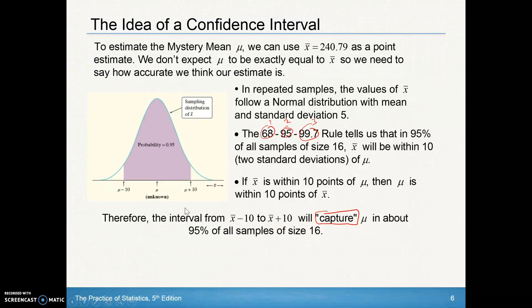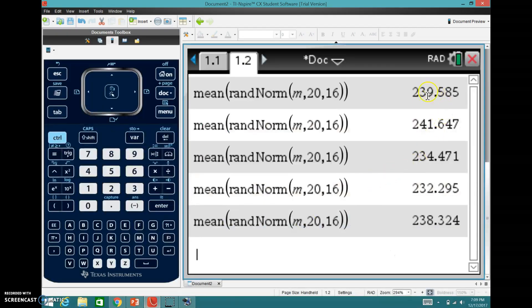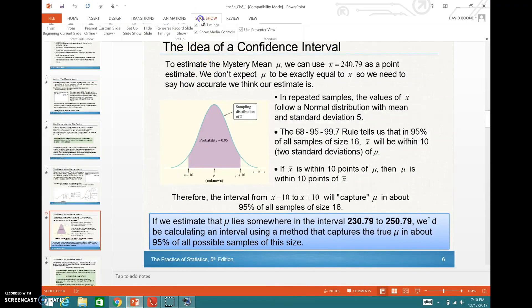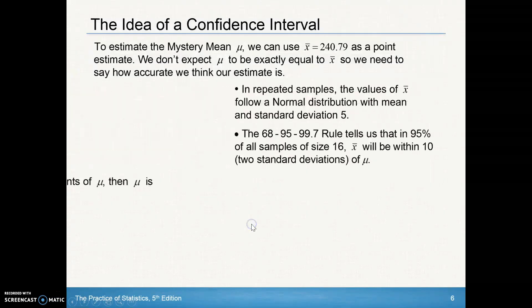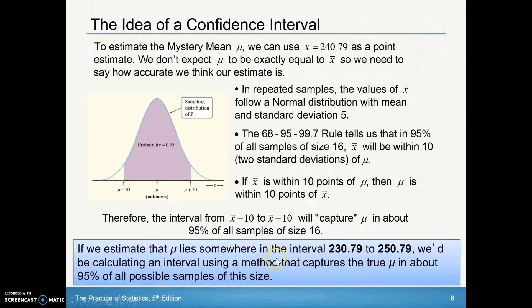So that's where I kind of say as x-bar is within 10 points of mu, then mu is within 10 points of x-bar. Therefore, the interval from x-bar minus 10 to x-bar plus 10 will capture, that's kind of the key word here, will capture mu in about 95% of all samples of size 16. In other words, what I have is this range of values. I had my x-bar minus 10 and my x-bar plus 10, so the 240.79 minus 10 and 240.79 plus 10. That range of values should capture the mu in 95% of all those samples that we took earlier. Going back to the screen here, or the calculator, I would say that 95% of these are within my margin of error, how much I'm allowing to capture my value in.